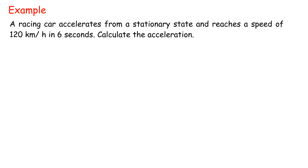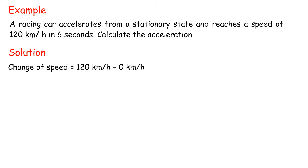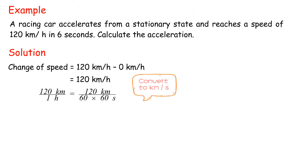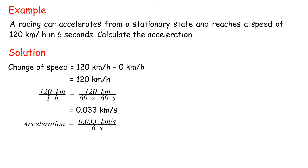Example: A racing car accelerates from a stationary state and reaches a speed of 120 kilometers per hour in 6 seconds. Calculate the acceleration. Acceleration equals 0.033 kilometers per second over 6 seconds, equals 0.0056 kilometers per second per second, or km over second squared.